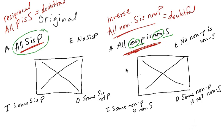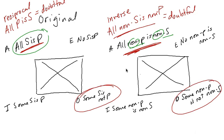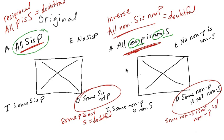The other doubtfuls are going to be associated with the O statements — they're going to be backwards O's, because O does not convert. So we're going to find a problem with those O's. It will look like this: 'some P is not S' — that's doubtful. Or 'some non S is not non P' — also doubtful.